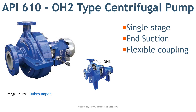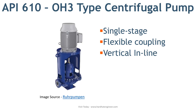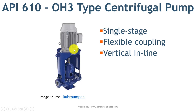Next is OH3 type pump. OH3 is a flexibly coupled, single stage inline pump with an overhung impeller. It has a separate bearing bracket and comes with an integral bearing housing which helps in absorbing pump load. The motor is directly mounted on the pump. It also uses flexible coupling.